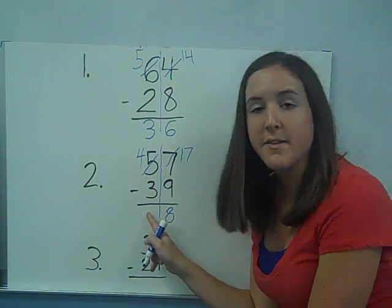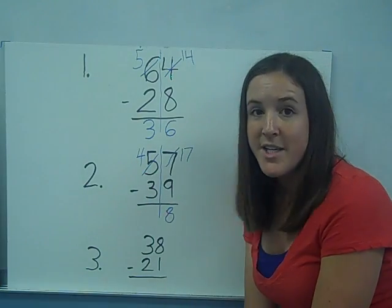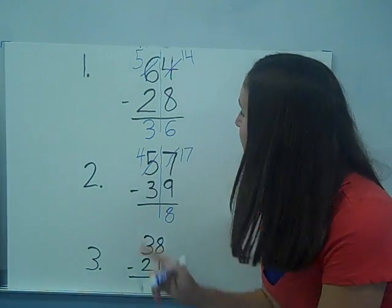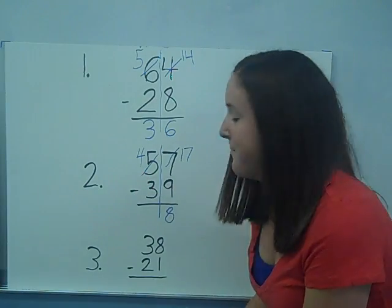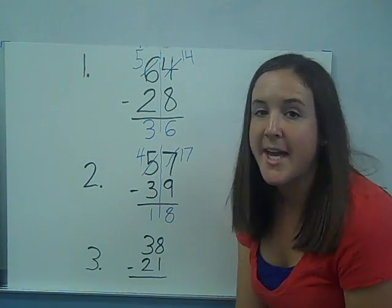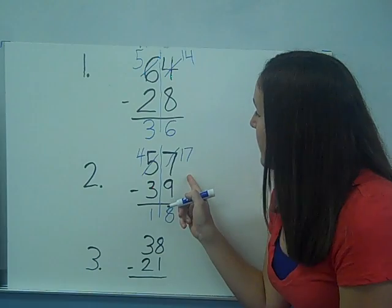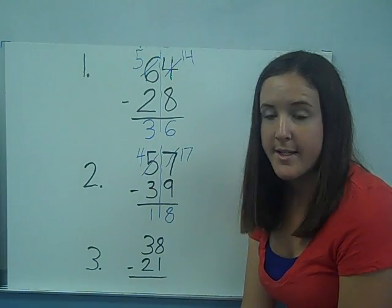Alright, now I look at the tens. The top number is bigger than three, so I can go ahead and go figure. Four minus three is one. And now I have my answer. Fifty-seven minus thirty-nine is eighteen.